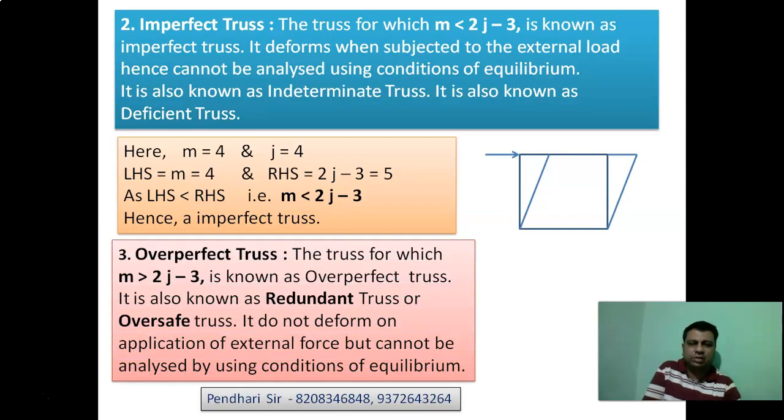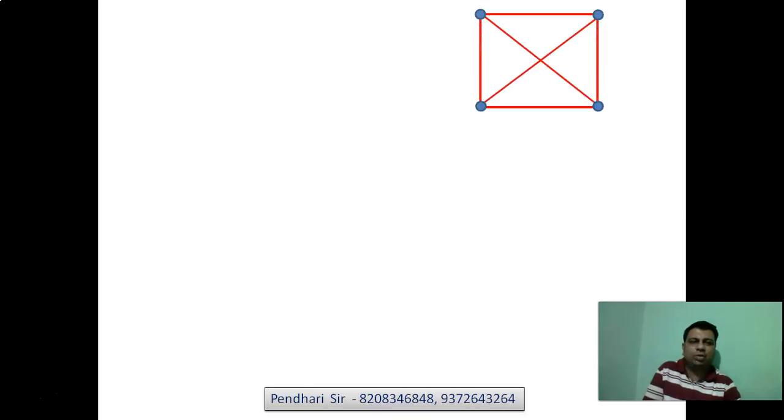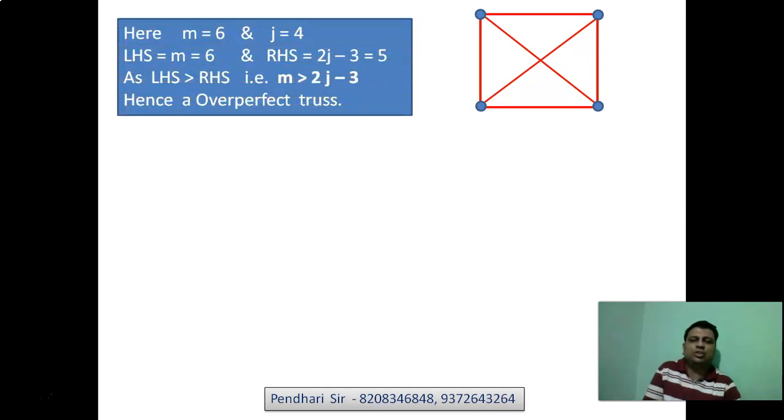Third is over-perfect truss. The truss for which m is greater than 2j minus 3 is known as over-perfect truss. It is also called redundant truss. This truss does not deform on application of external force, but it cannot be analyzed using conditions of equilibrium. Take for an example, here joints are 4 and members are 6. m equals 6, 2j minus 3 equals 5. 6 is greater than 5, therefore it is an over-perfect truss.